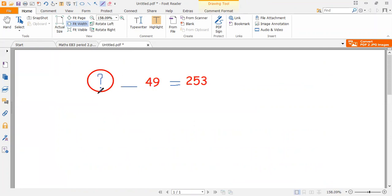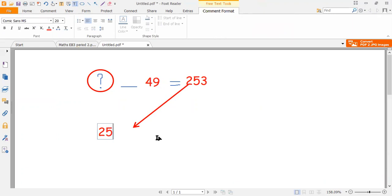When we have a missing number here, the missing in a subtraction sentence, I'm going to write first 253.